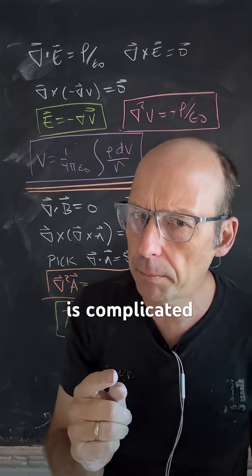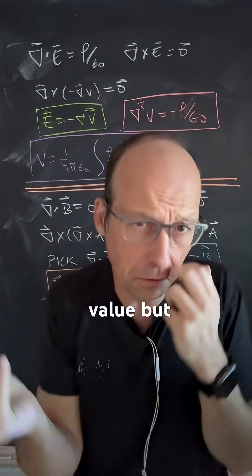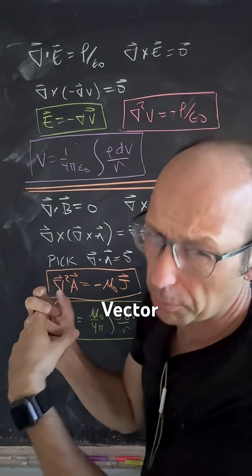The magnetic vector potential is complicated, but it's kind of like the electric potential, which is a scalar value, but different. So going back to the electric potential, I think we can understand the magnetic vector potential.